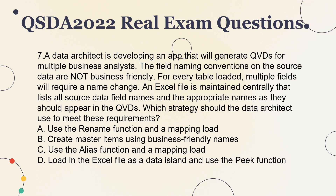Question 7. A data architect is developing an app that will generate QVDs for multiple business analysts. The field naming conventions on the source data are not business friendly. For every table loaded, multiple fields will require a name change. An Excel file is maintained centrally that lists all source data field names and the appropriate names as they should appear in the QVDs. Which strategy should the data architect use? A. Use the rename function and a mapping load. B. Create master items using business friendly names. C. Use the alias function and a mapping load. D. Load in the Excel file as a data island and use the peek function.